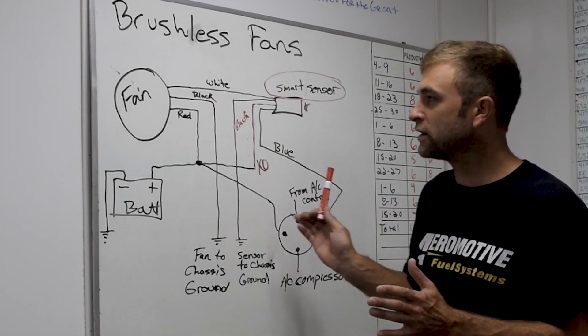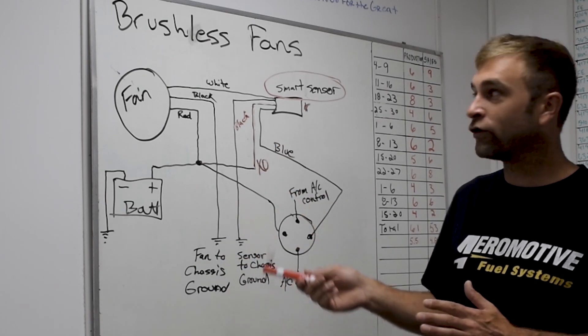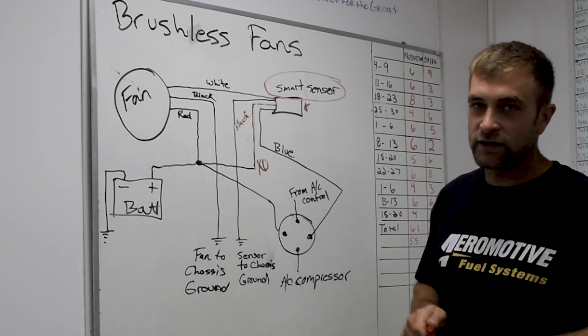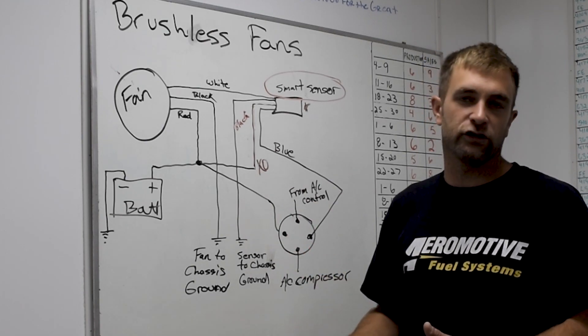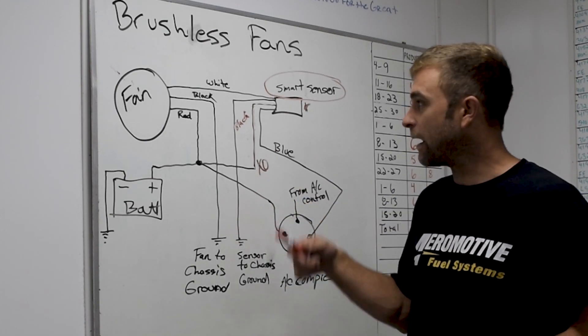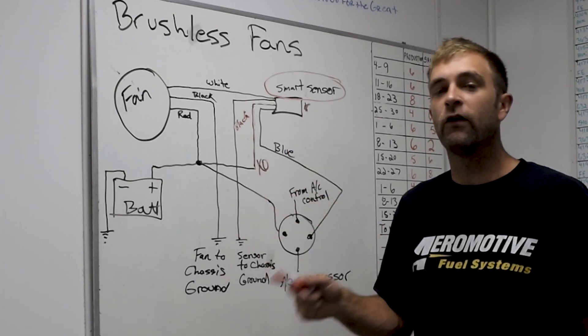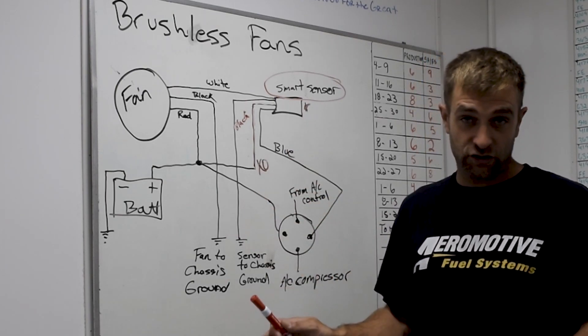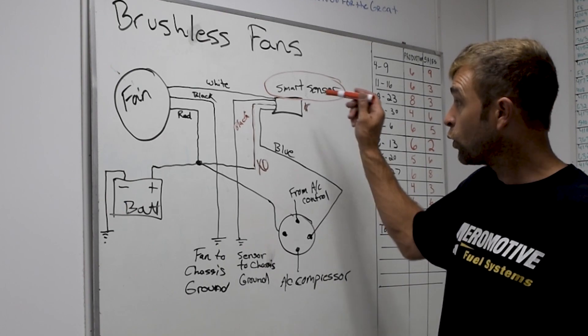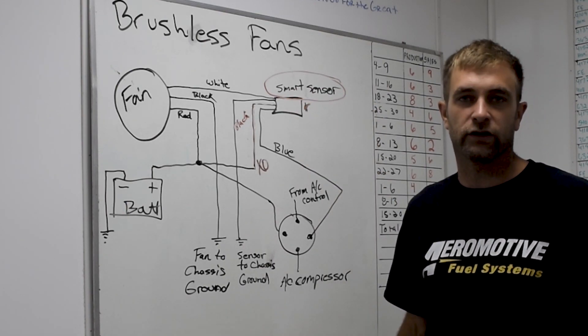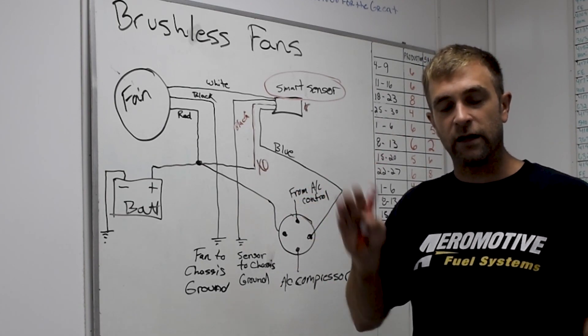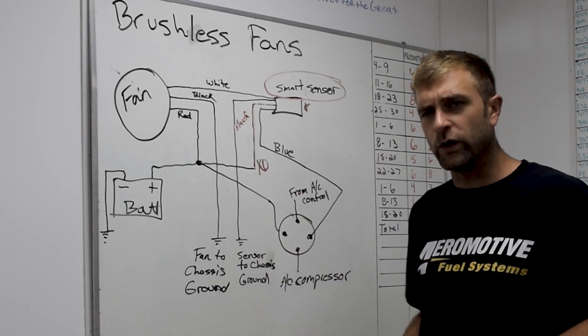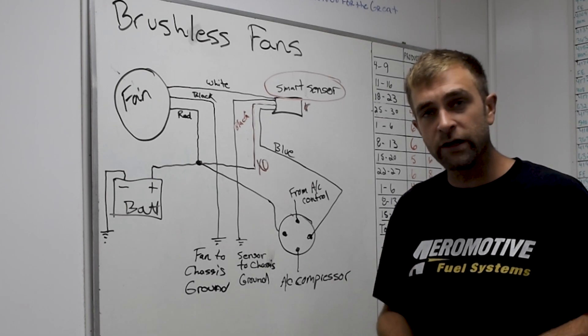When we first did this, our concern was because it's all hooked to power and ground, we're not really sure what goes on inside that sensor, do we have a parasitic draw on the battery? That may be a concern somebody will have. We have checked it. There is no parasitic draw whatsoever. With inside this sensor, it completely shuts the circuit off. So that's the difference between the brushless and brush style fans. I feel like we understand those extremely well.